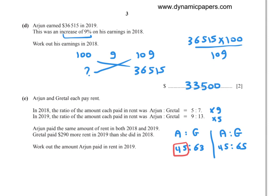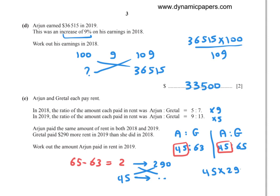The difference in parts for Grittle between 2019 and 2018 is 65 minus 63 equals 2 parts. Two parts equals $290. Arjun paid 45 parts, so cross-multiply: 45 times 290 divided by 2 equals $6,525.